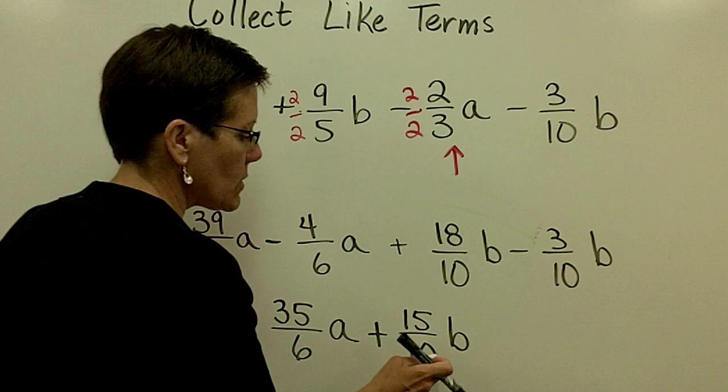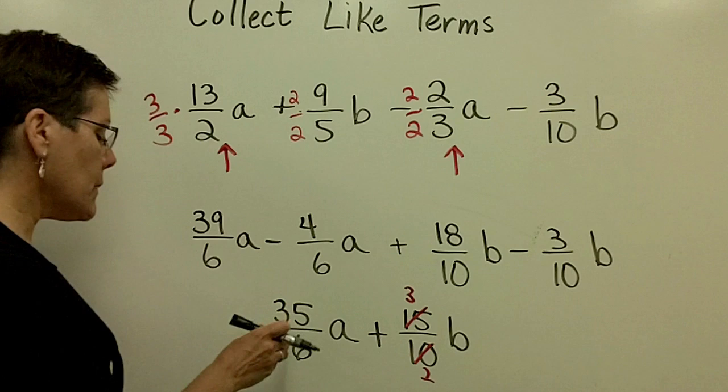5 goes into here twice. 5 goes into here 3 times. That would be 3 halves b. I think that one's all set. There's nothing that it can be reduced by. And I'm all done. Careful combining like terms. The variable portion has to be the same and you add or subtract their coefficients.